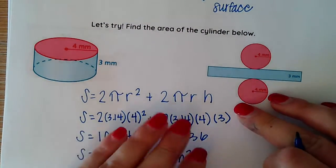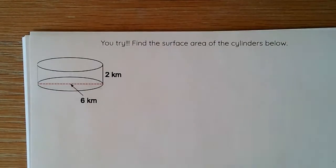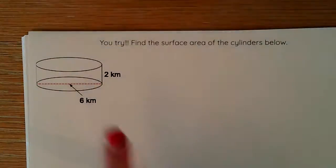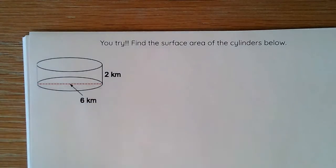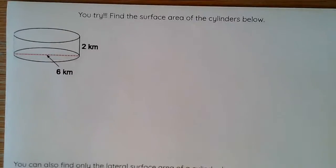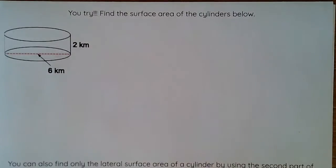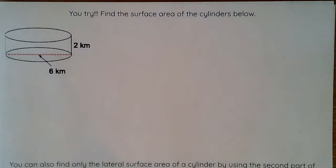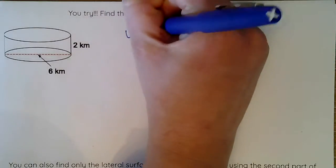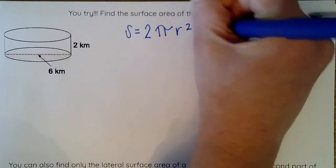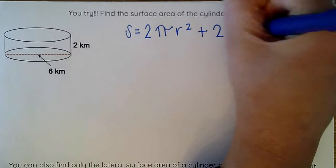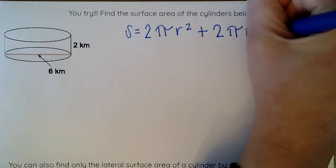Now we want to pay attention because sometimes, instead of getting a radius in our diagram like we did here, we will have our diameter. And we need to pay very close attention to make sure that we're using that diameter appropriately. So we continue with the same formula. I still at the top of my paper write S = 2πr² + 2πrh.